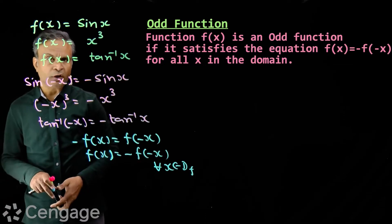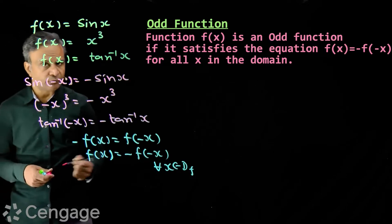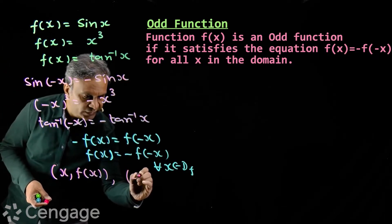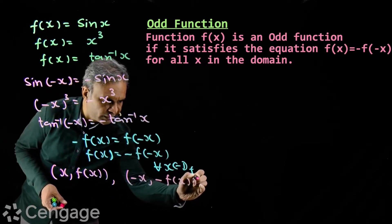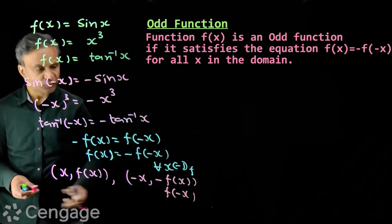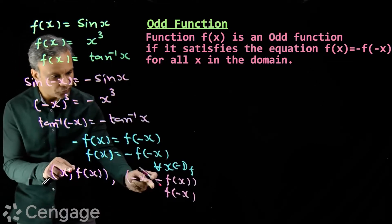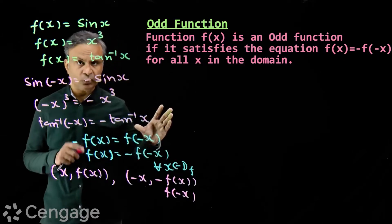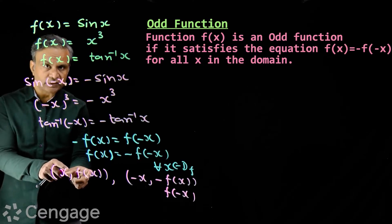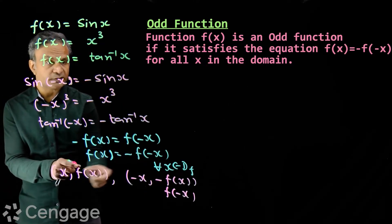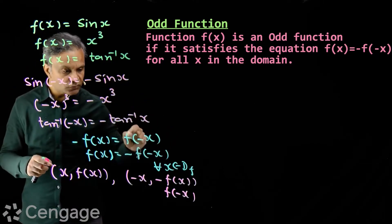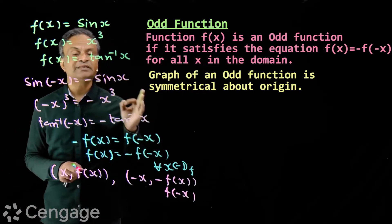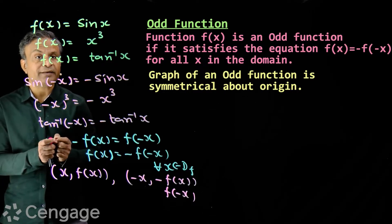This is the definition of an odd function. If we consider some point on the graph of an odd function with coordinates (x, f(x)), then there will be a point on the graph with coordinates (-x, -f(x)), because -f(x) is actually f(-x) for an odd function. These two points are symmetrical about the origin — they lie in opposite quadrants. If this point lies in the first quadrant, then the other point lies in the third quadrant. This is called point symmetry — symmetry about the origin. That means the graph of an odd function will be symmetrical about the origin.